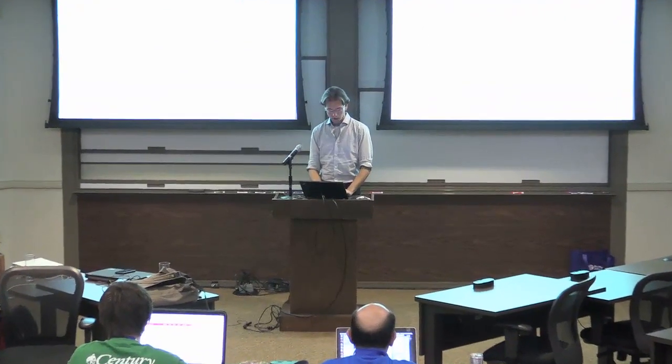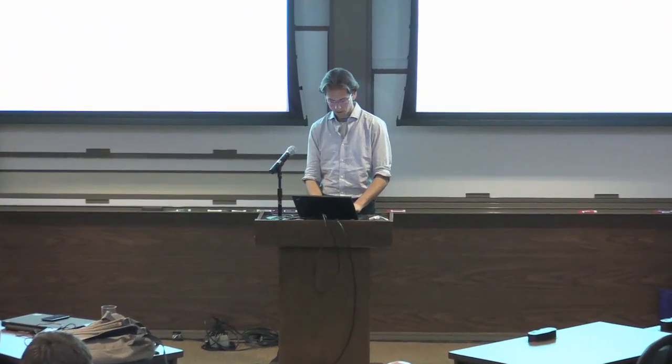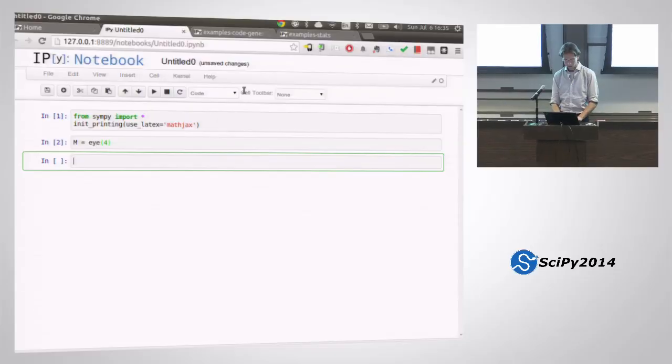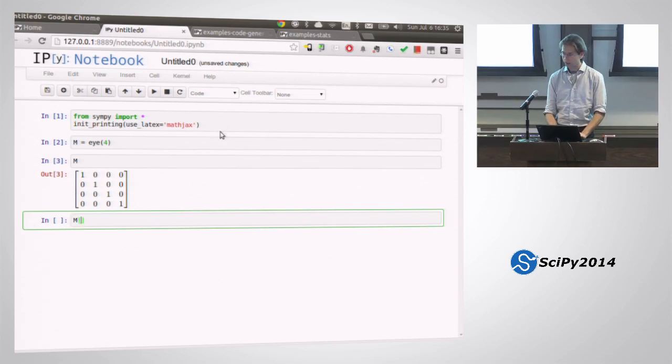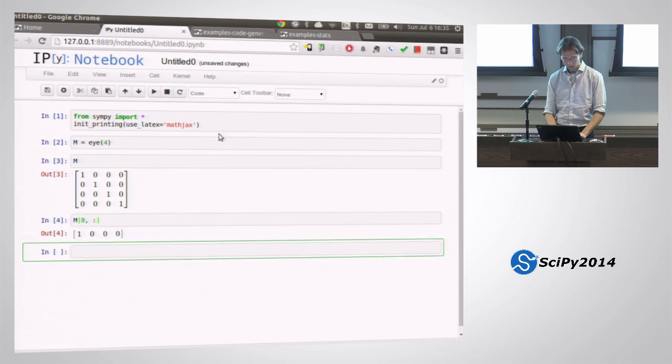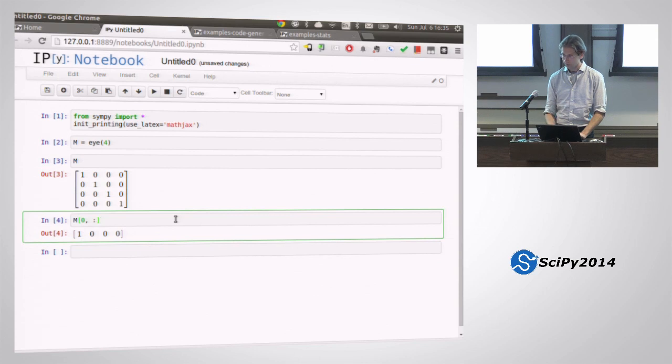So you have some matrix and you want to get the first row by doing this, but you want to operate in place and say times equals 3.